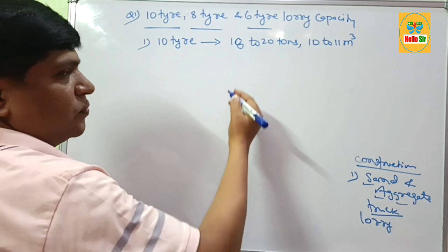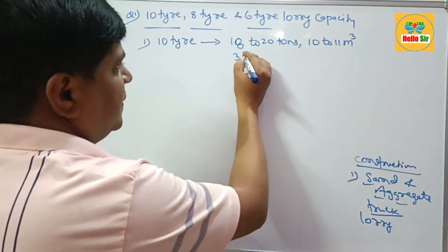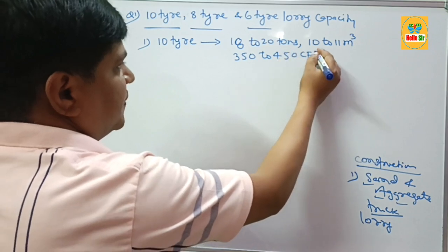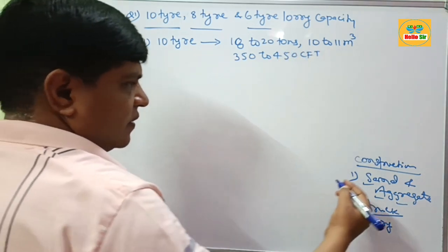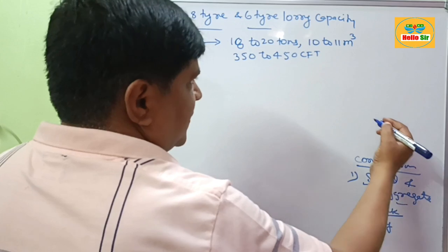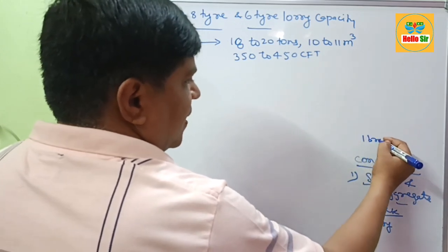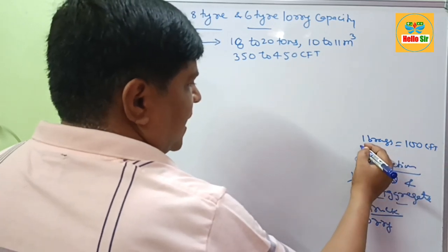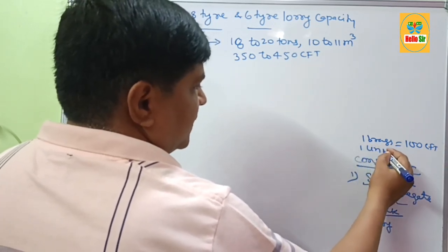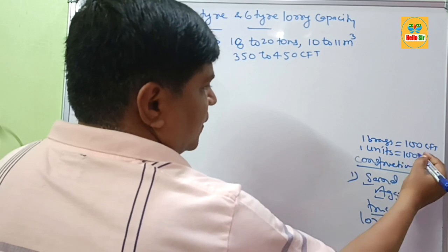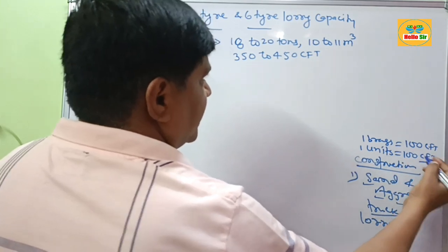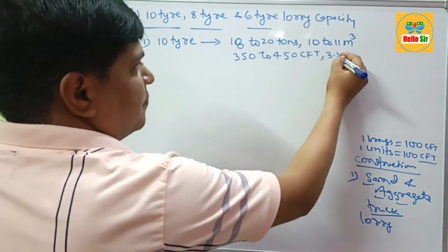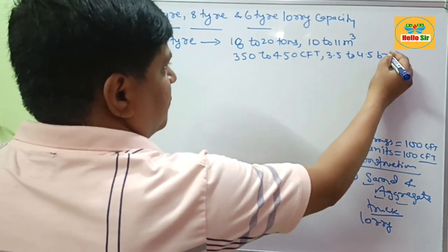And if you measure in cubic feet, this will be 350 to 450 cubic feet. In North India, it can be measured in brass, and one brass is equal to 100 CFT. In South India, it can be measured in units, and one unit is equal to 100 CFT. If you measure in brass, it can be 3.5 to 4.5 brass.